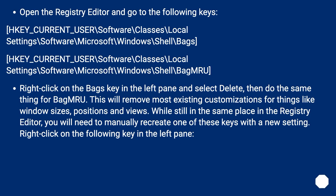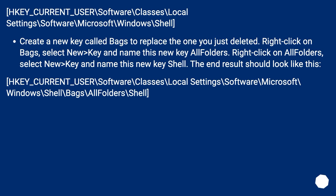While still in the registry editor, you will need to manually recreate one of these keys with a new setting. Right-click on HKEY_CURRENT_USER\Software\Classes\Local Settings\Software\Microsoft\Windows\Shell. Create a new key called Bags to replace the one you just deleted. Right-click on Bags, select New > Key, and name this new key All Folders. Right-click on All Folders, select New > Key, and name this new key Shell. The end result should be: ...\Shell\Bags\All Folders\Shell.